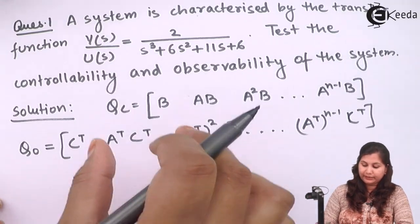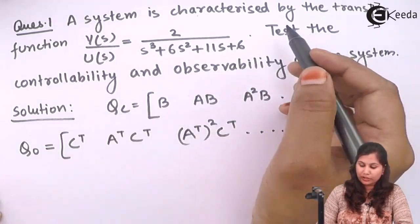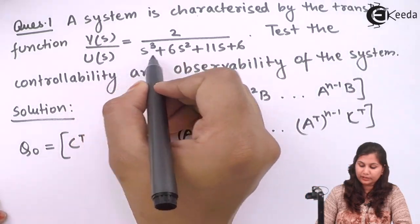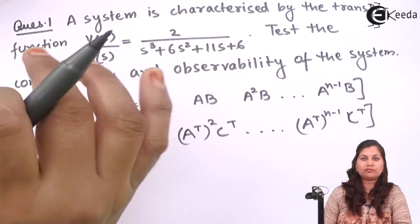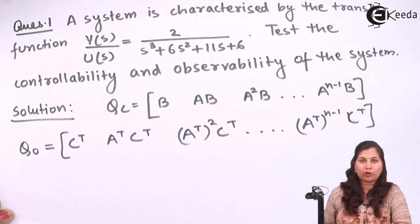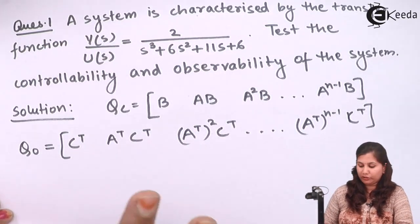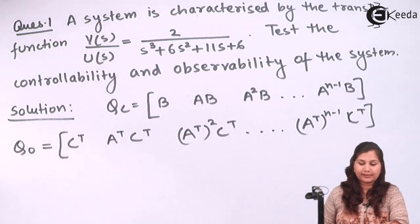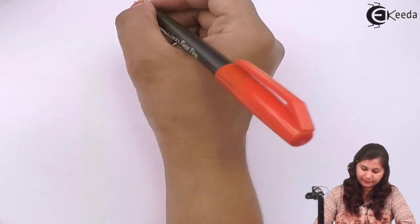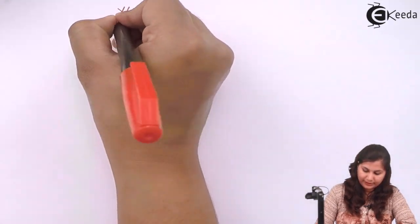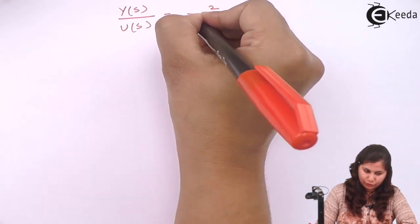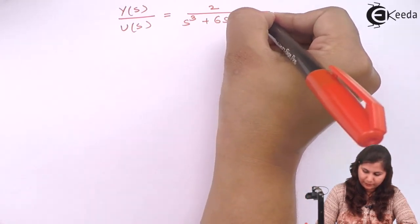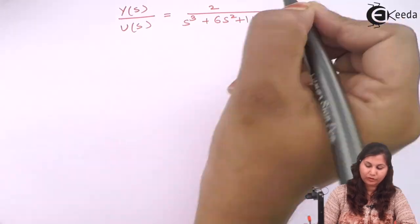First we have to determine the state model of this system, because it is given to us in transfer function form. Using this transfer function we will derive the state model, and through the state model we will get the ABCD matrices. The transfer function is Y(s)/U(s) = 2 / (s³ + 6s² + 11s + 6). We cross-multiply it.